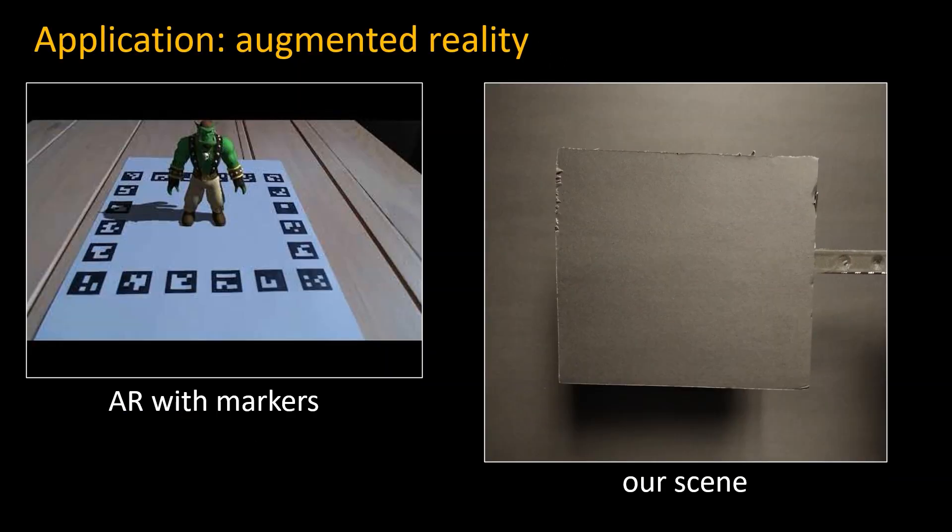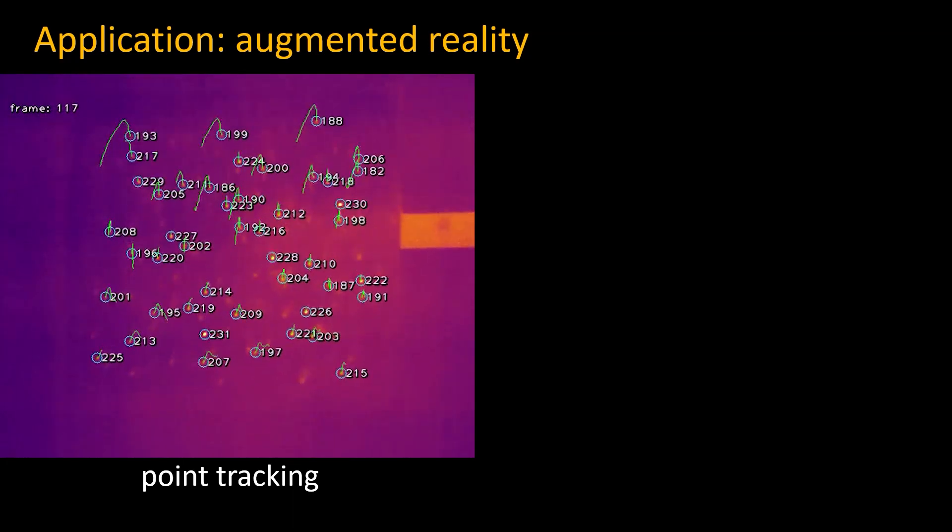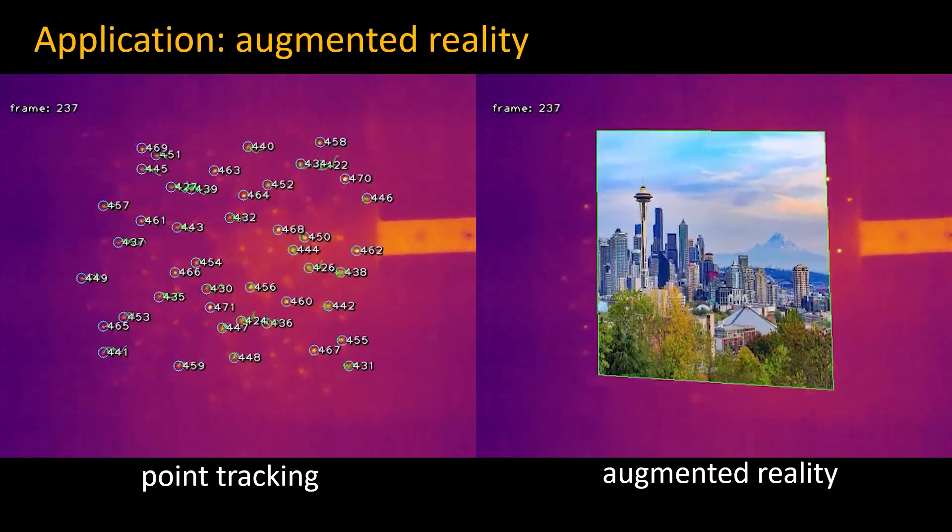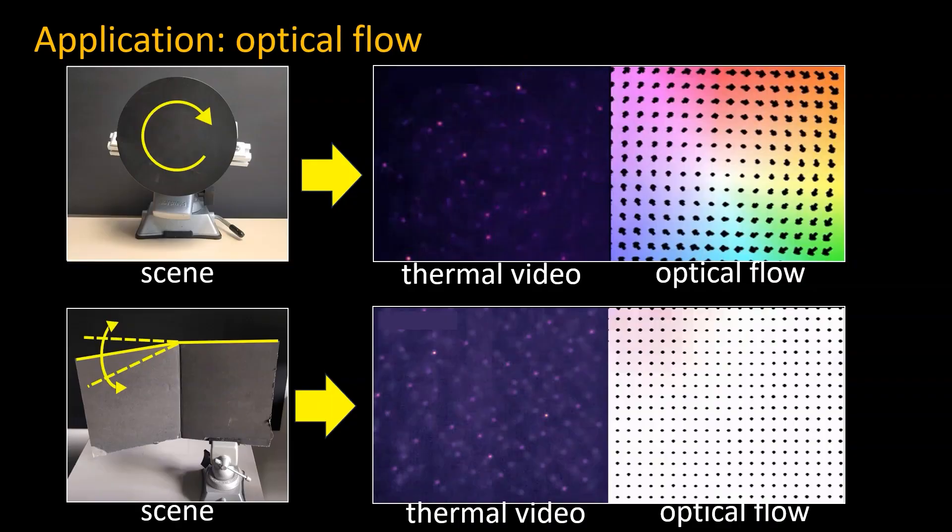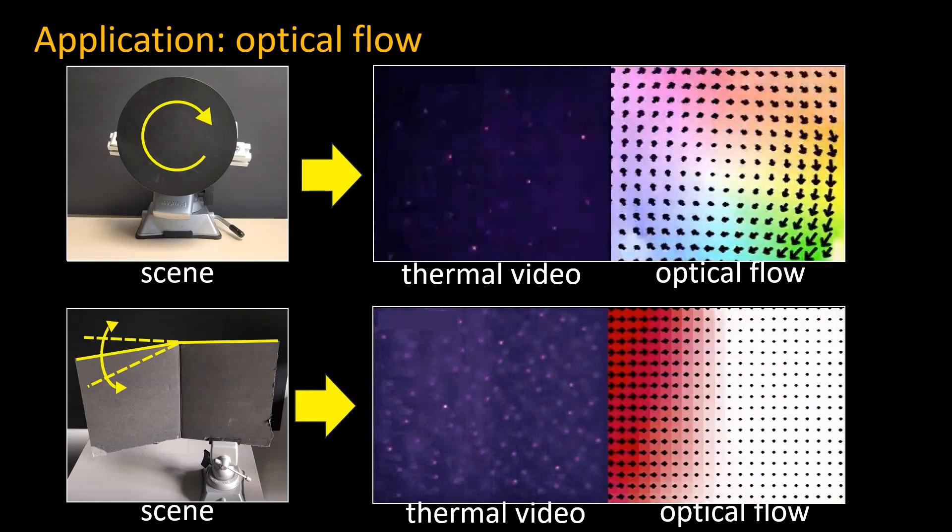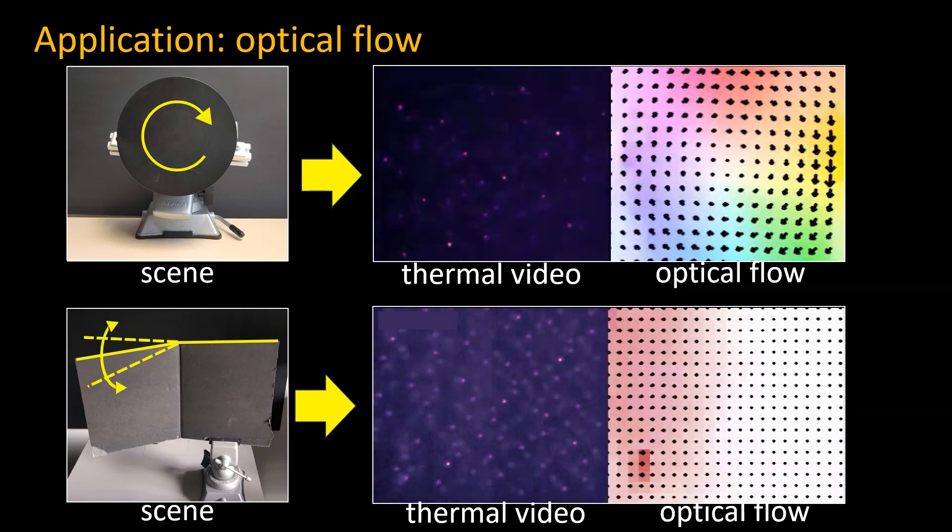Let's look at a different application. In this experiment we move a black textureless board in front of another textureless board. Here we track the projected points, which allows us to superimpose a picture on the plane's surface. And instead of tracking points explicitly, we can use the resulting heat pattern to compute the optical flow between the frames for the motion of these textureless objects.